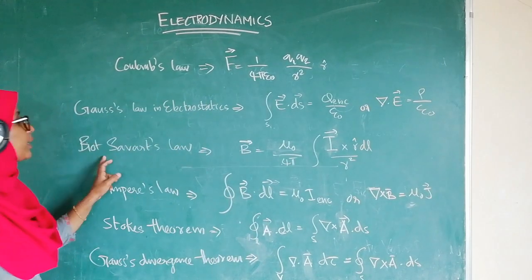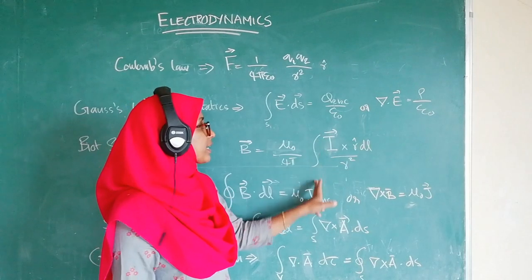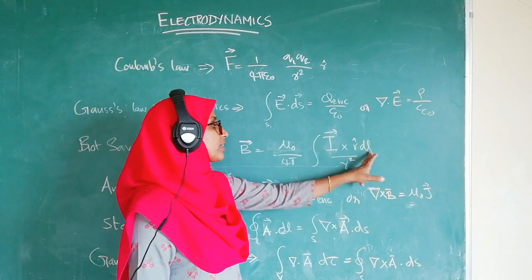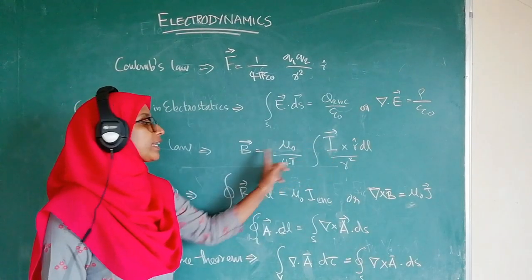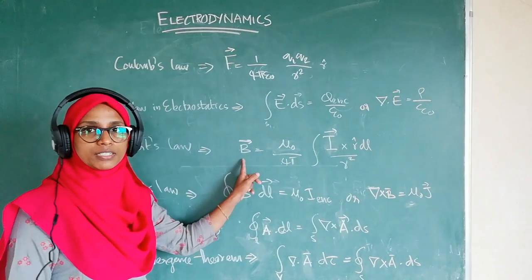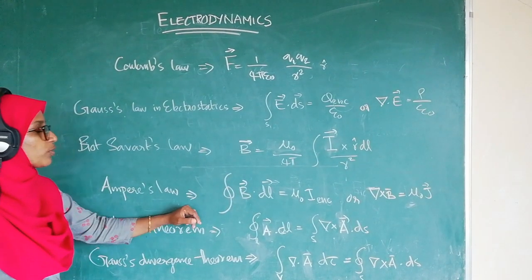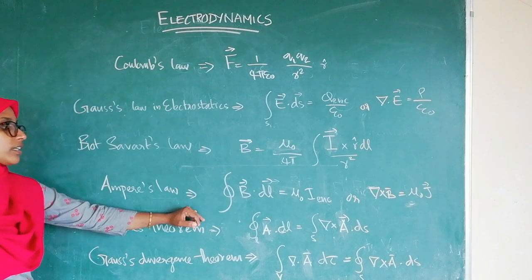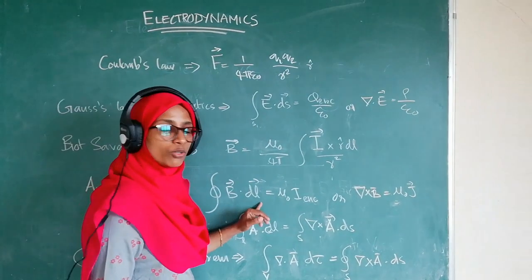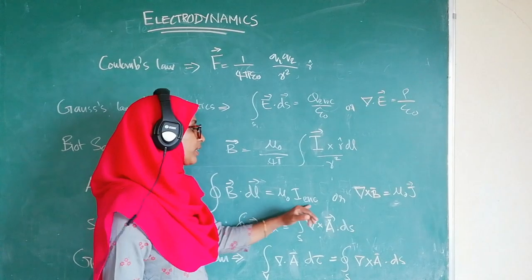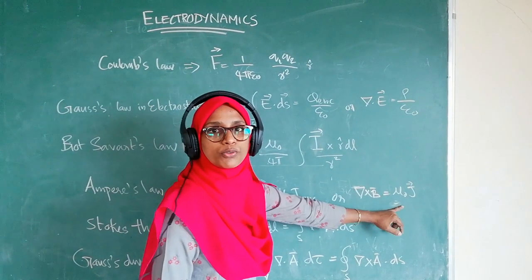The Biot-Savart law gives B equal to (mu-zero over four-pi) times the integral of I cross r dL over R-squared, relating current to magnetic field. Ampere's circuital law — analogous to Gauss's law in electrostatics — states the line integral of B·dL equals mu-zero times I enclosed, with differential form curl B equals mu-zero J.